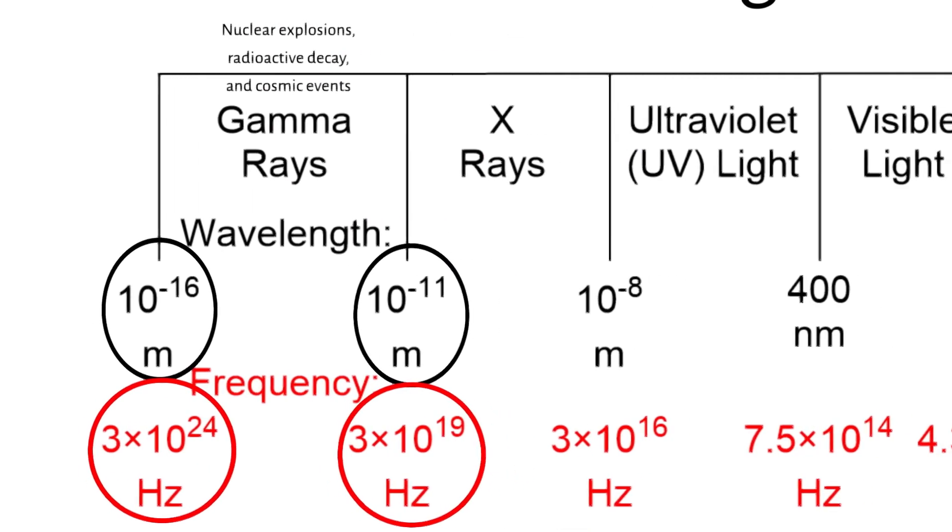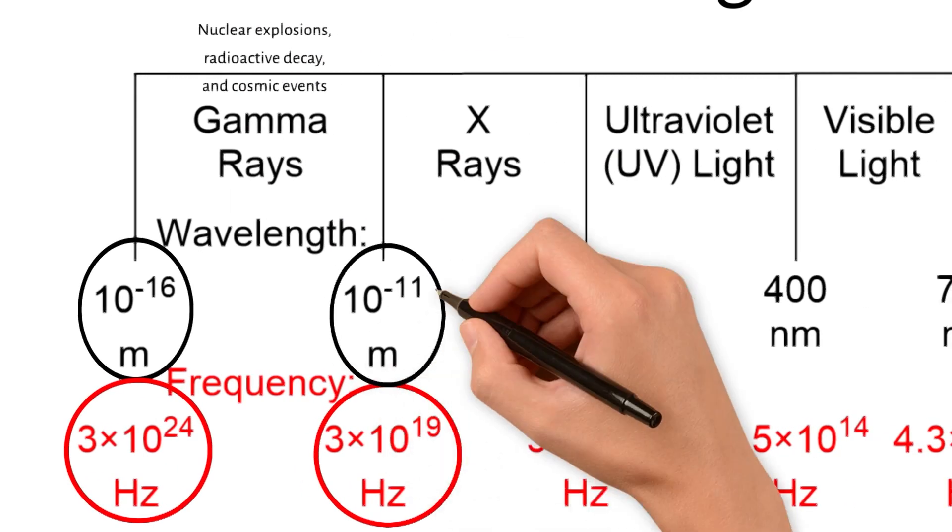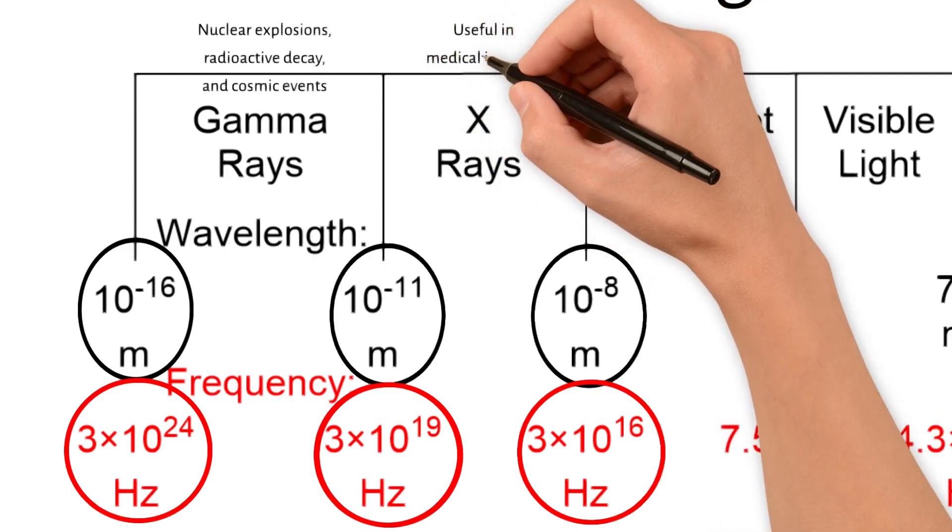Next is X-rays. X-rays have wavelengths ranging from 10 picometers to 10 nanometers, and frequencies ranging from 3 times 10 to the 16th Hertz to 3 times 10 to the 19th Hertz. This high frequency range allows X-rays to penetrate various materials, making them particularly useful in medical imaging.